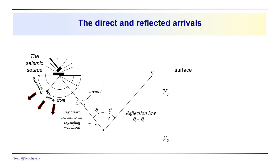Last time we discussed some basic properties of the seismic wavelet. We generate a wavelet or a mechanical disturbance at the source. We discussed the idea of dominant frequency, dominant period, and the fact that the wavelet is a transient — it has a beginning and an end. We also noted that the journey the wavelet can take from the source to the receiver is partitioned along a variety of different pathways.